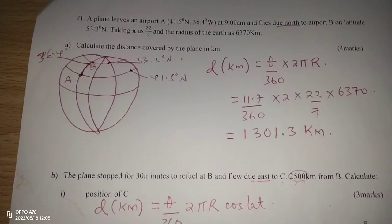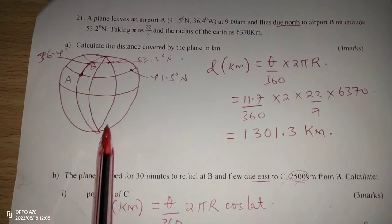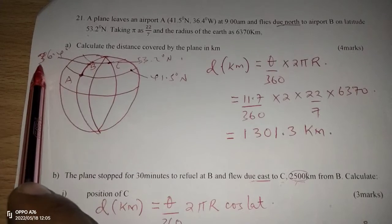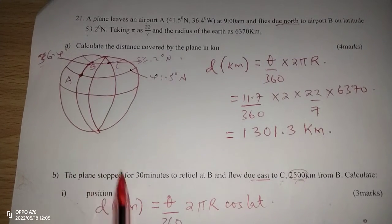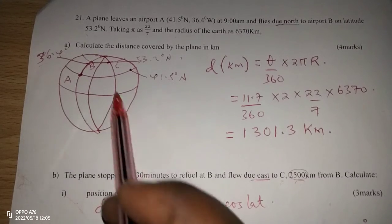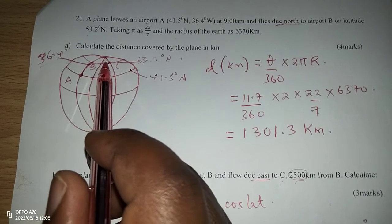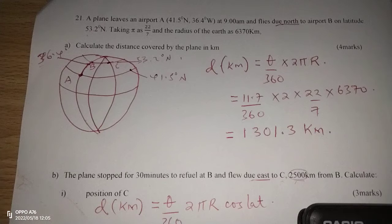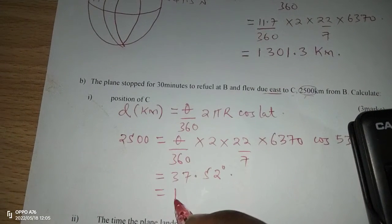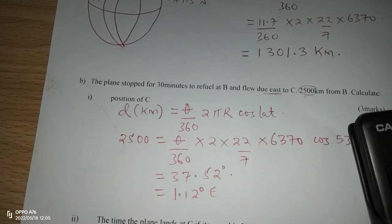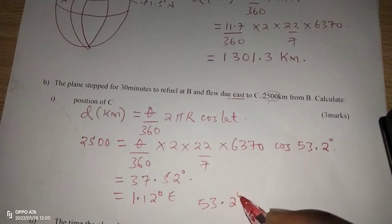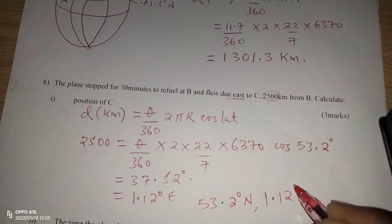Therefore, we are covering from B 37.2 degrees until we reach where C is. And now that B is at 36.4 west, and we are going through an angle difference of 37.2, then it means we will pass the prime meridian and still have some more degrees to the east side. So to the east, we will have 37.2 and we subtract 36.4 such that we are getting 1.2 degrees to the east. Therefore, to write the position of C, it will be 53.2 degrees north, 1.2 degrees east.